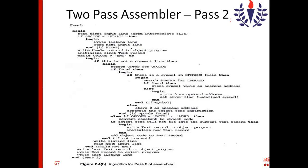The assembler uses both the symbol table and the op table in pass one as well as pass two. The op table contains the mnemonic and its machine equivalent. The fundamental functions of the assembler are: first, converting mnemonics into machine equivalents, and second, assigning addresses to labels. These two steps form the object code. The assembler derives the mnemonic value from the op table — if found, it has the machine equivalent for that mnemonic.